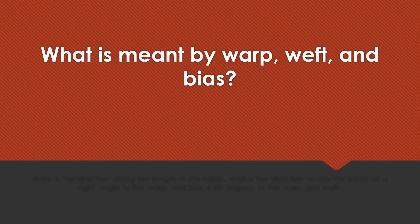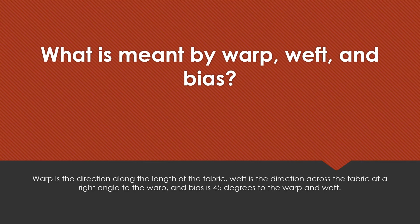What is meant by warp, weft, and bias? Warp is the direction along the length of the fabric, weft is the direction across the fabric at a right angle to the warp, and bias is 45 degrees to the warp and weft.